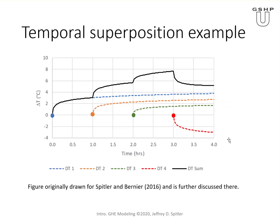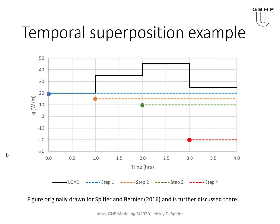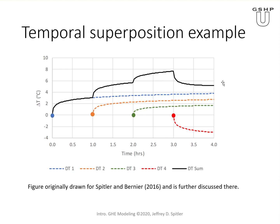Using the line source — or another approach — we calculate the temperature response, specifically the delta T at the borehole wall, for each of these step functions. The black line shows the overall response when all contributions are summed together. The blue dashed line is the response due to just the first pulse of 20 W/m, then we add the response to the 15 W/m pulse, the 10 W/m pulse, and the negative 20 W/m pulse. When added together, we get a sawtooth-type profile that tracks the original load steps.